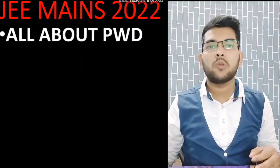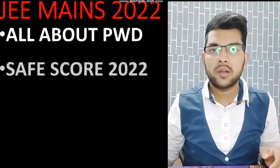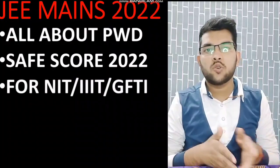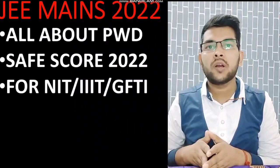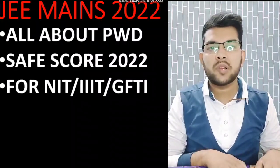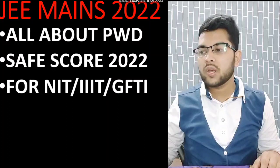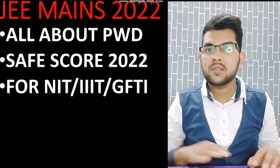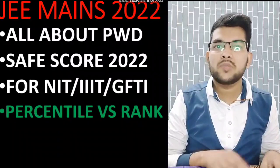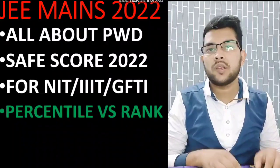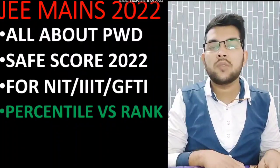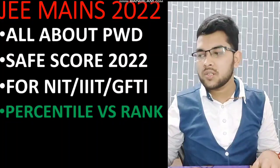I will talk about the safe score — the percentile you need to have at least in order to get an NIT, IIIT, or GFTI college. I have provided information last year for PWD candidates and this year also I will provide all the information up to your admission. I will also discuss percentile versus rank — that is percentile versus your PWD category rank. For example, if you score 90 percentile, how much will be your PWD rank?